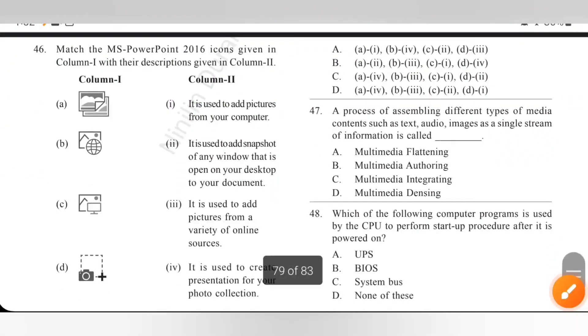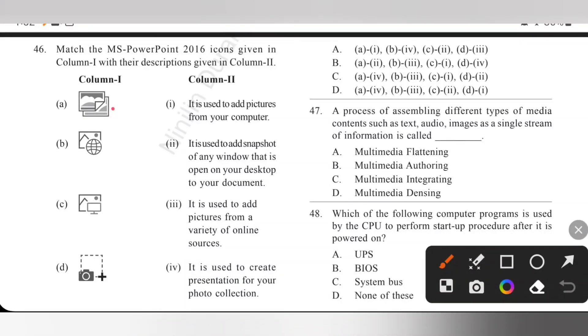Achiever section. Question 46: Match the MS PowerPoint 2016 icons given in column 1 with their description given in column 2. So, please pause the video and please check the option column 1 and then column 2. So, A, it is used to create presentation for your photo collection. So, A4. So, option either option C or D will be the correct answer. Next, B, it is used to add picture from a variety of online sources. So, B3. And then, C, it is used to add picture from your computer. Then, D, it is used to add snapshot of any window that is open on your desktop to your document. So, D2. So, option C is the correct answer. Option C: A4, B3, C1 and then D2.